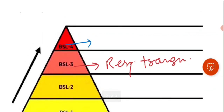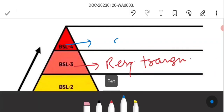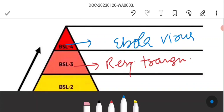At containment level 4, the microorganism is very dangerous. For example, the Ebola virus is extremely dangerous. If you are working in an industry or fermenter dealing with such organisms, which are highly dangerous and aerosol-transmitted, the infections can be very fatal.